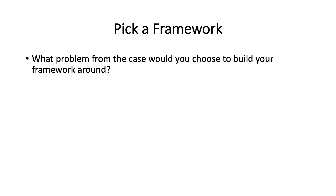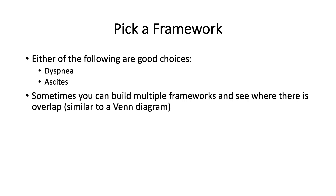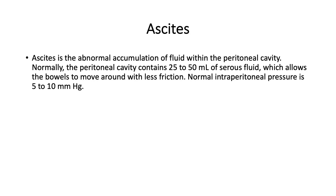Now that we have the bare bones of the case, we're ready to choose a problem to build a framework around. The obvious choices here are dyspnea and ascites — either one is good. Sometimes when a case is complex and there are multiple disparate problems, you can build multiple frameworks and focus on the overlap, similar to how a Venn diagram works. For the sake of this presentation, we will build our framework around ascites.